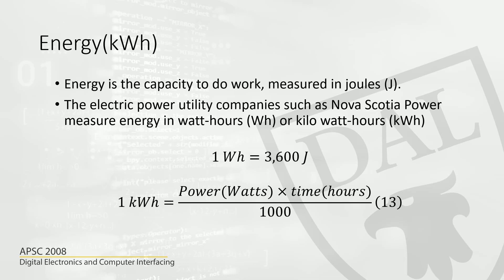One watt hour equals 3600 joules. If you wanted to calculate kilowatt hours — the unit we often use — you multiply power times hours and divide by a thousand to get kilowatt hours. You already know how to calculate power: power is voltage times current.